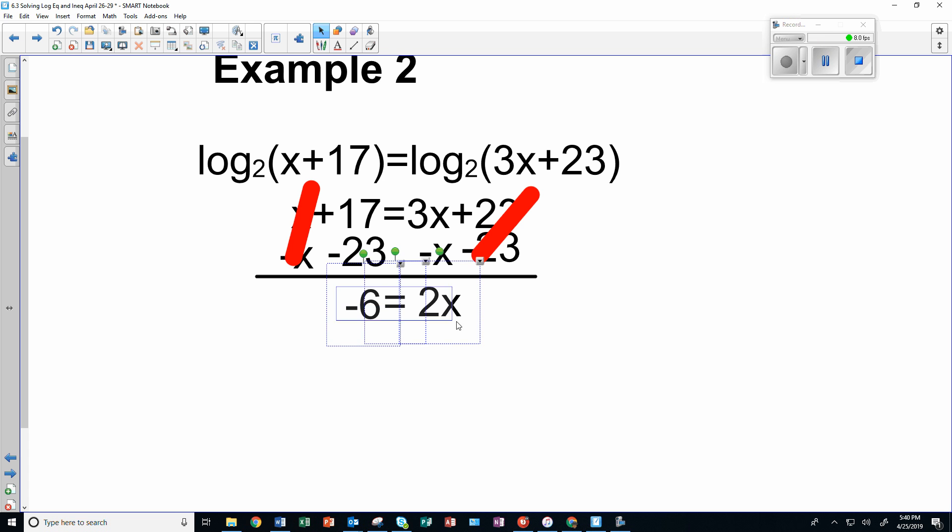So I can divide both sides by - let's clone this. And divide both sides by 2 to isolate x. Let's underline that and grab a 2.